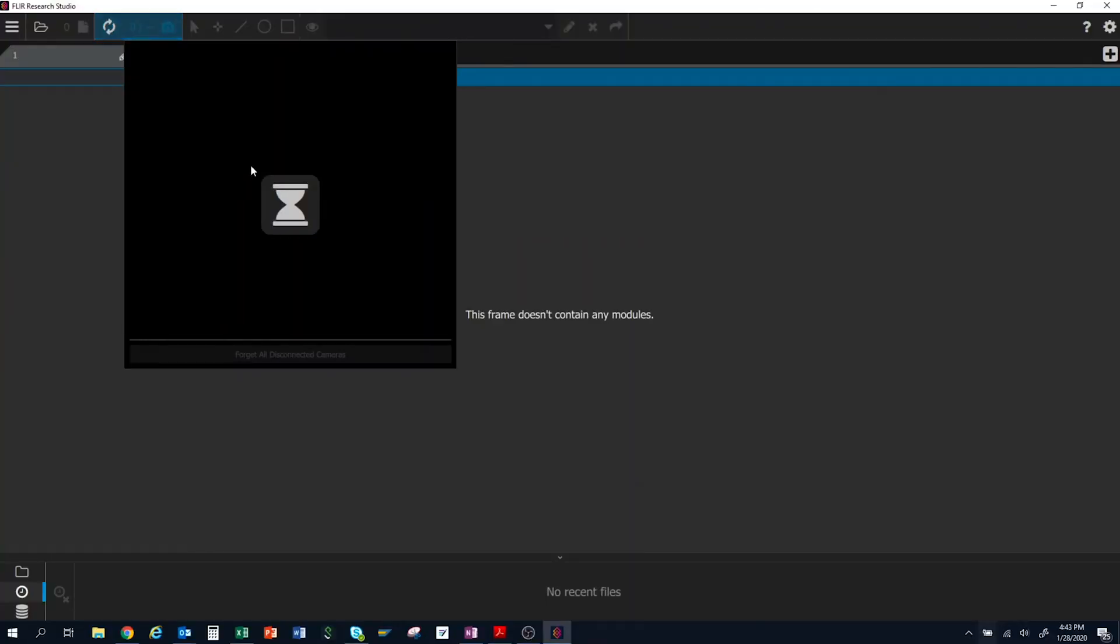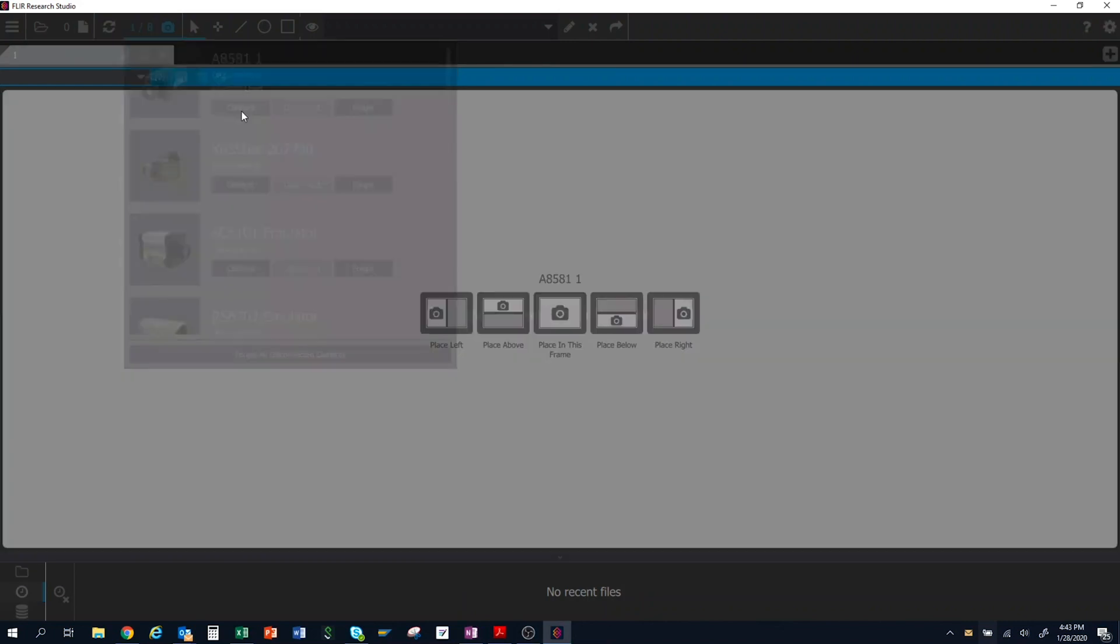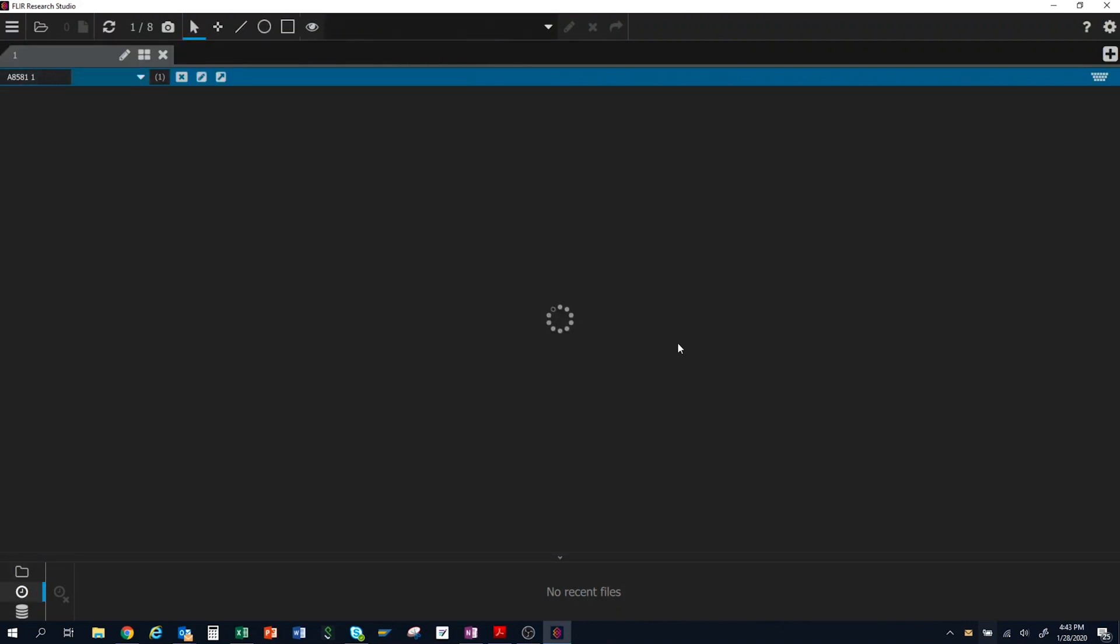Once the camera is cooled down, I can launch FLIR Research Studio. Within Research Studio, I'll need to search for connected cameras, then click the Connect button for the A8580 camera.